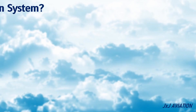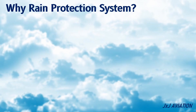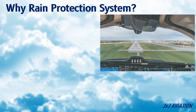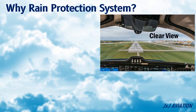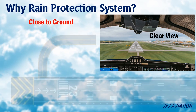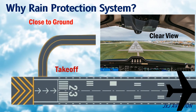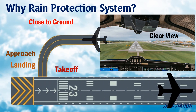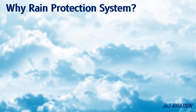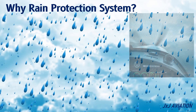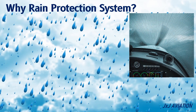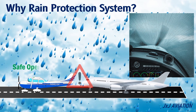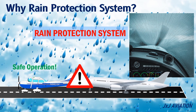Why is a rain protection system required in an aircraft? Pilots require a clear view ahead of the aircraft, especially when flying close to the ground during takeoff, approach and landing phases, or when taxiing at an airport. However, during rains, the view gets disturbed, which can affect the safe operation of an aircraft.